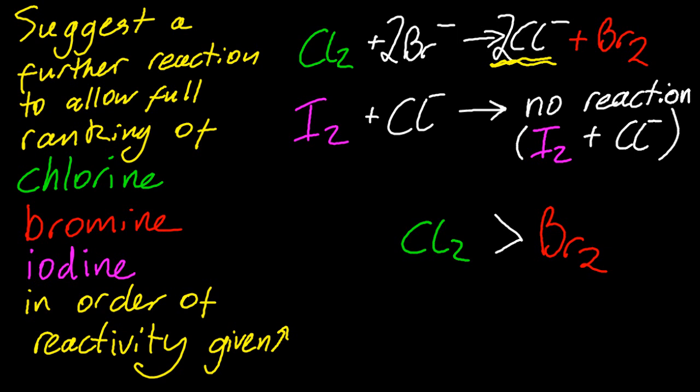So what colour change will I see? Well, green chlorine and colourless bromide makes colourless chloride and brown bromine. So the colour change is green to brown.